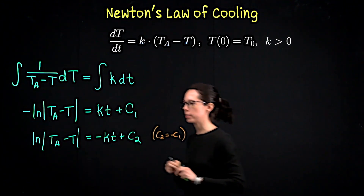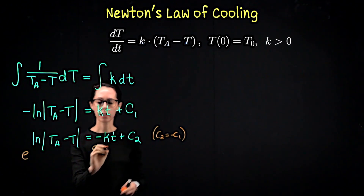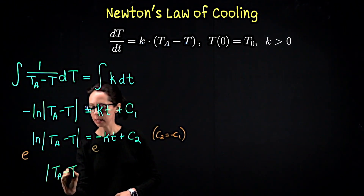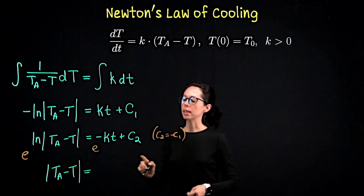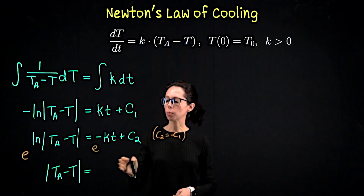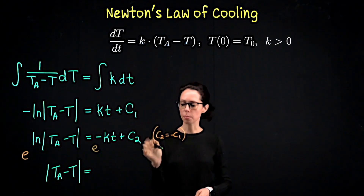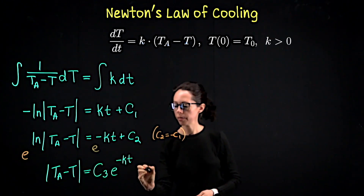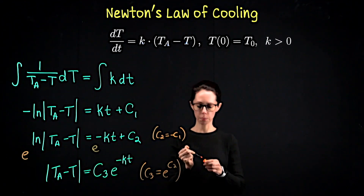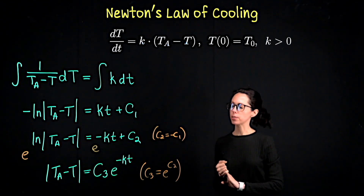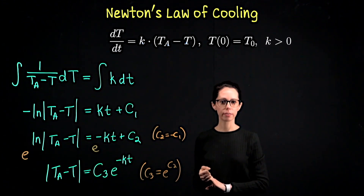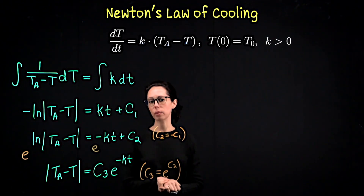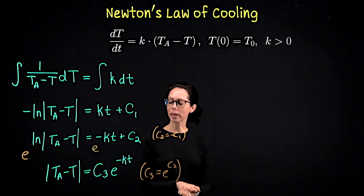We exponentiate both sides to isolate the temperature expression: e to the left equals e to the right. On the left we're left with |T_a − T|. On the right, since this is e raised to a sum, we can turn it into a product: e^(−kt) times e^(C₂), which we call C₃·e^(−kt), where C₃ is a positive constant equal to e^(C₂). Now think through what we should do with the absolute value — consider the three cases: what if the expression is zero, positive, or negative.